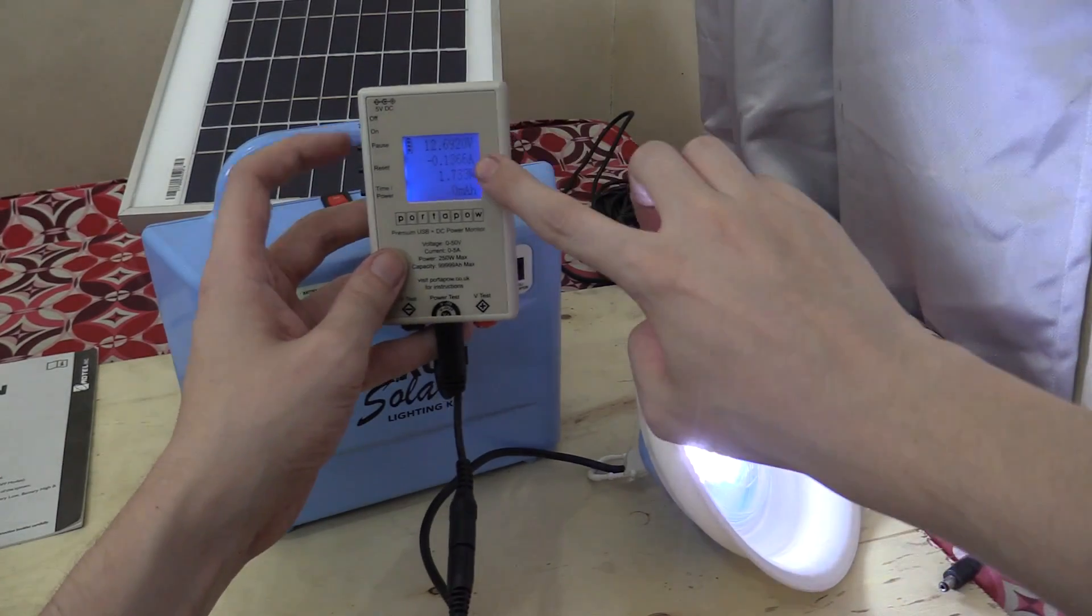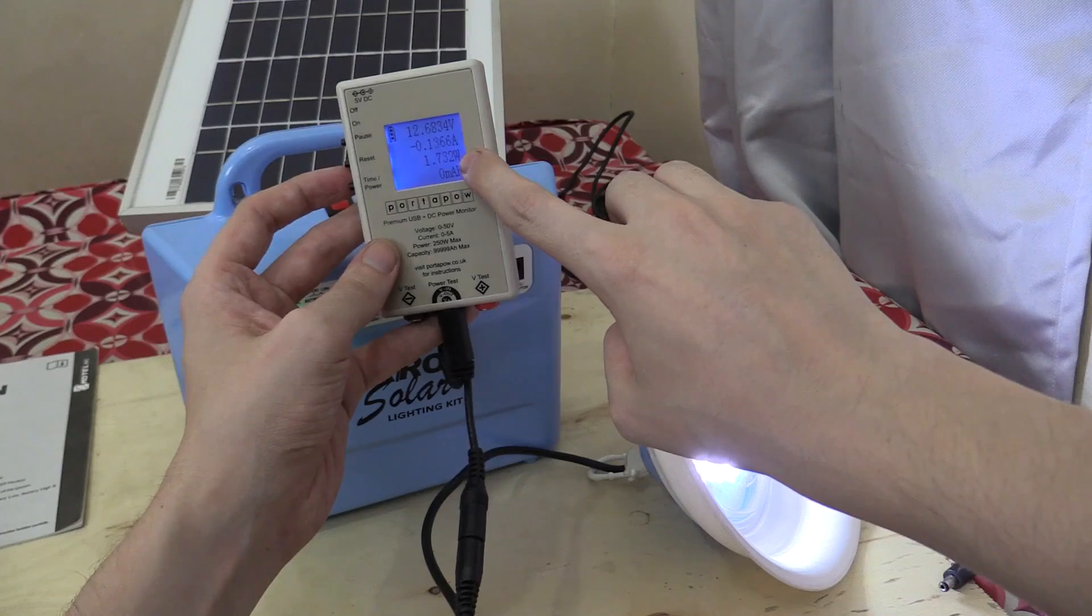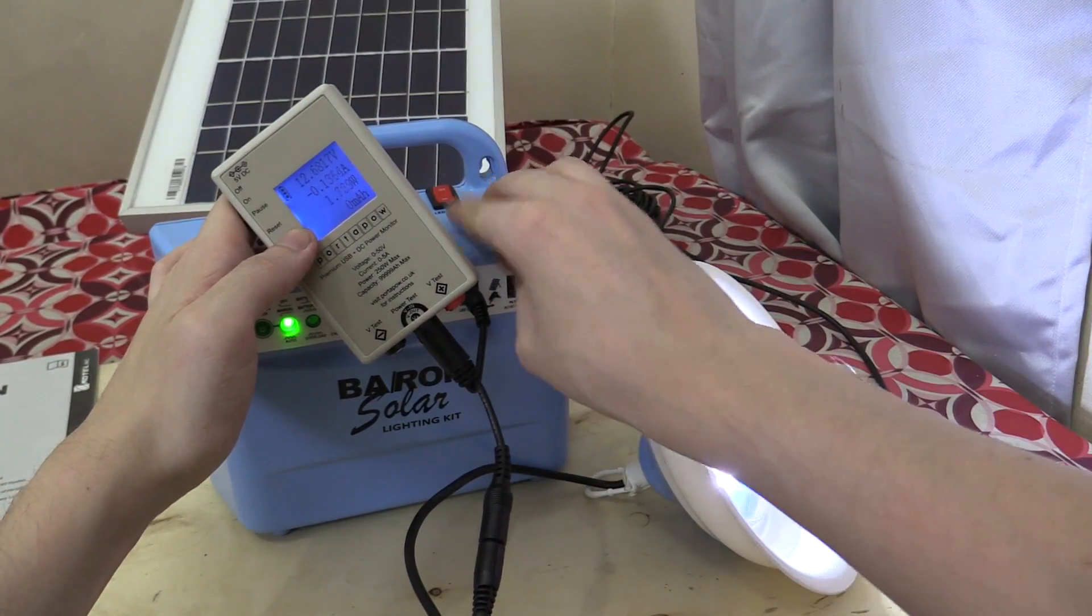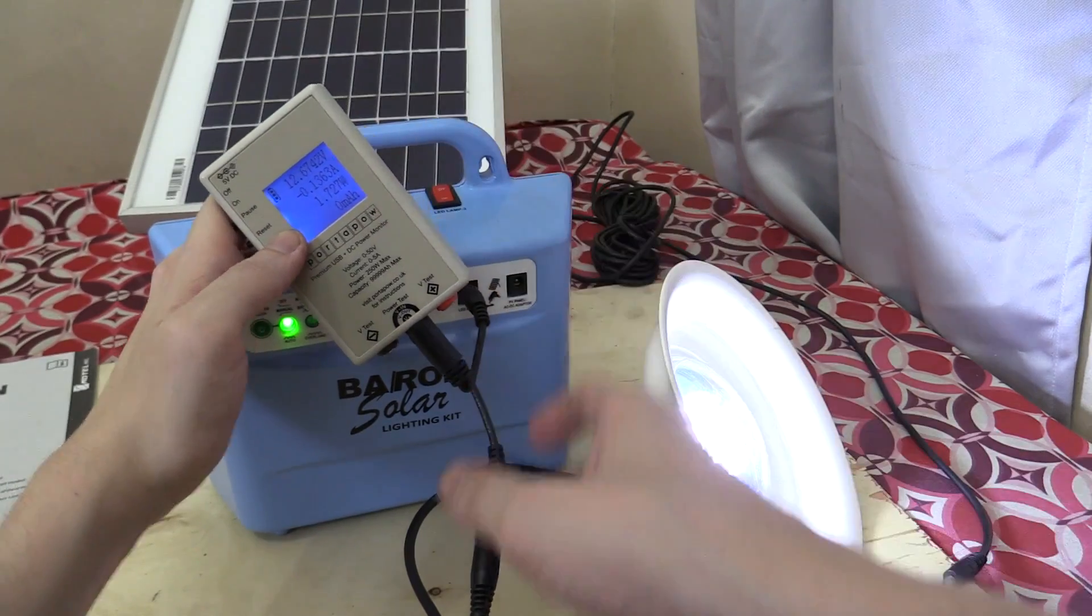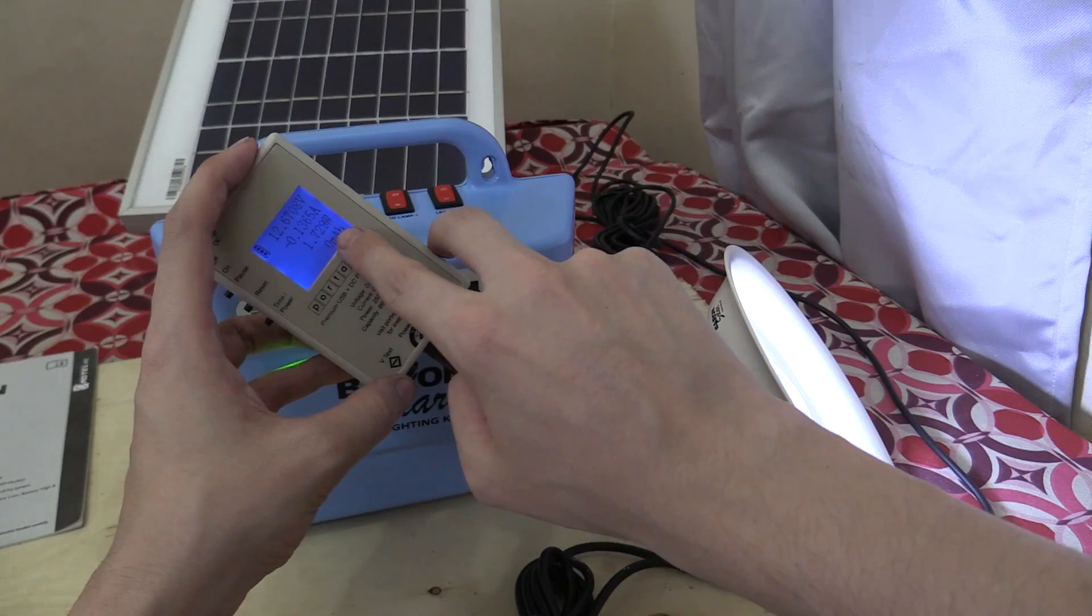Now I've plugged one of these lamps in through my wattmeter, and you can see it's measuring 1.7 watts. That seems a bit low. Let me try the other output port. Okay, 1.7 watts, and then let's try the other LED bulb. And this one's also measuring 1.7 watts.